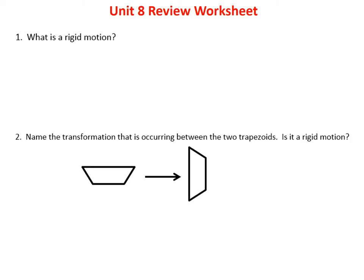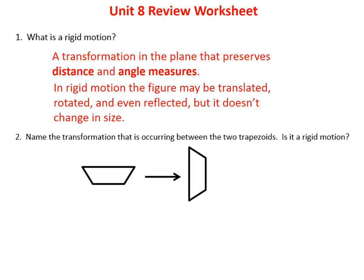The first question is: what is a rigid motion? A rigid motion is a transformation in the plane that preserves distance and angle measures. That simply means the size, length, and angles don't change. We've been studying three types of rigid motion: a translation, a rotation, and a reflection.